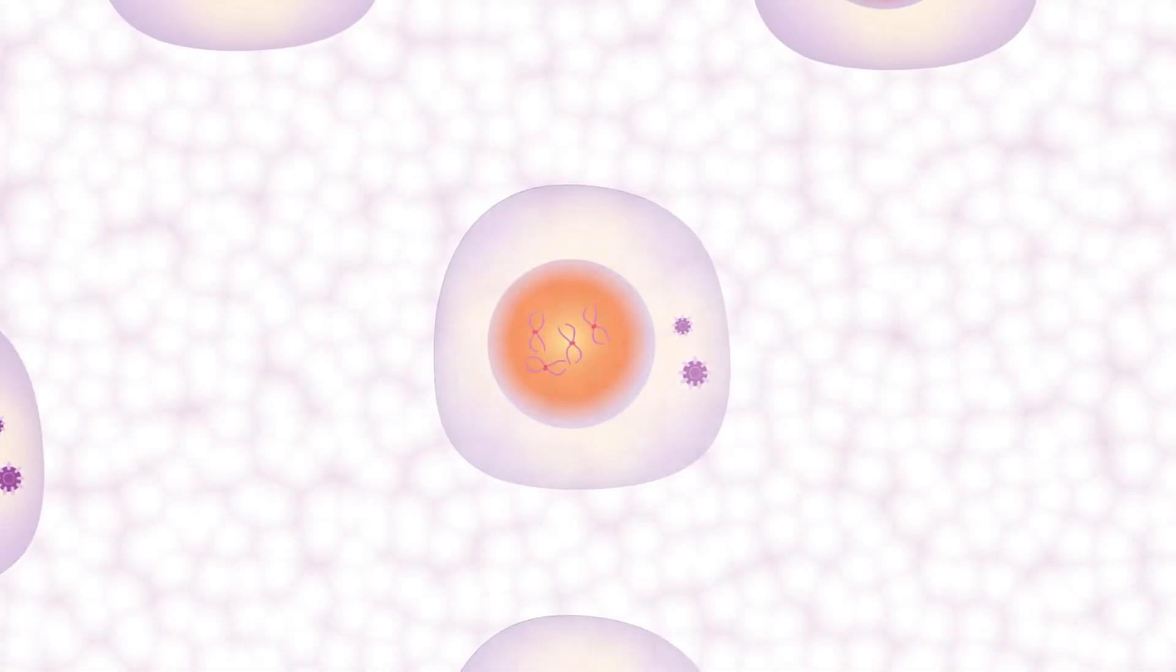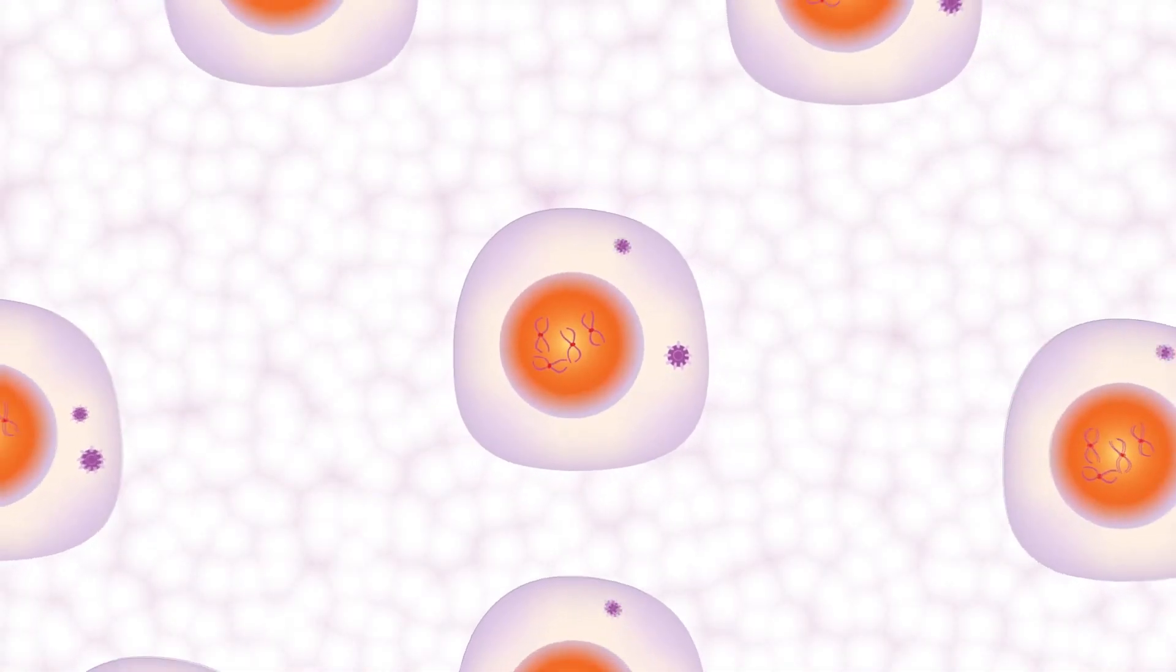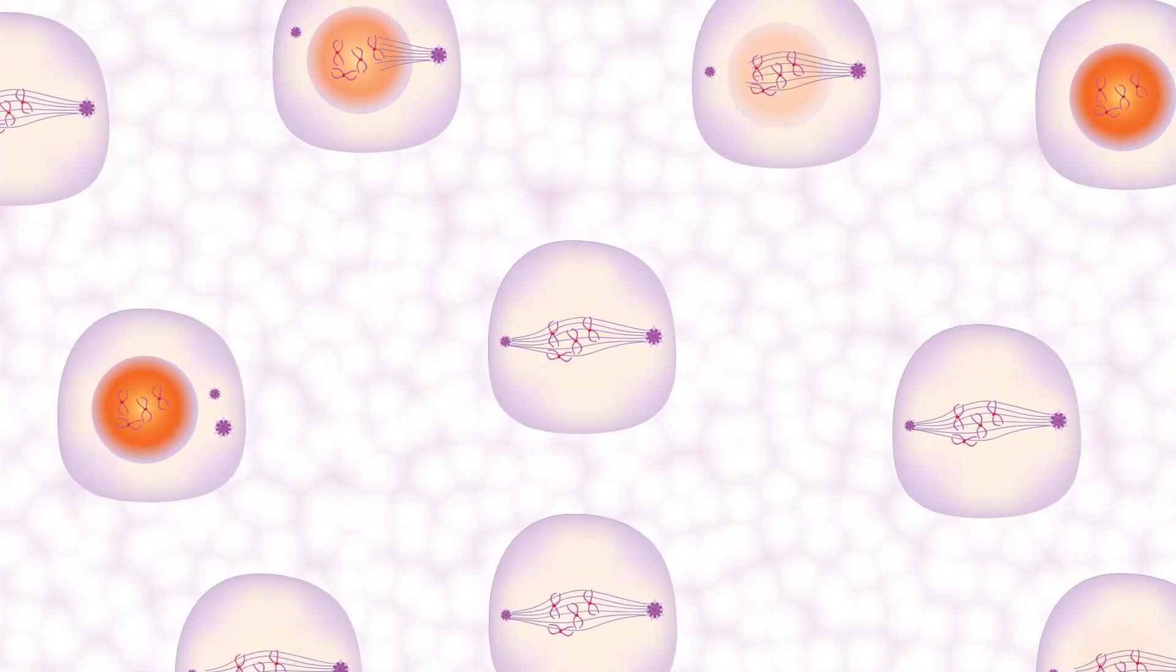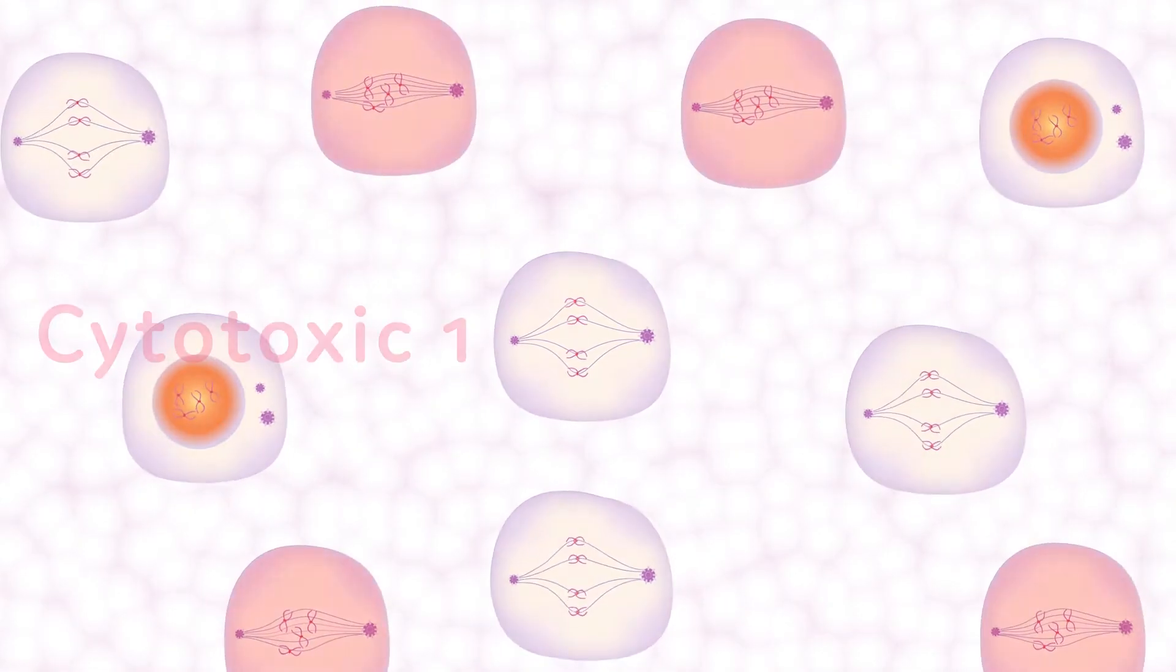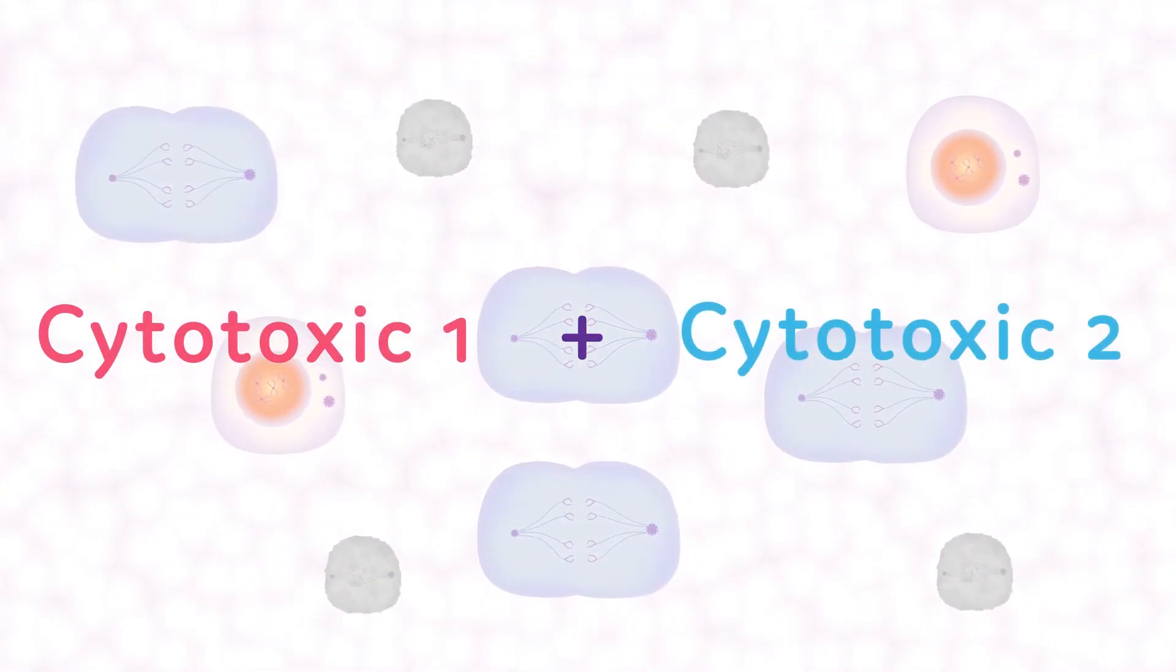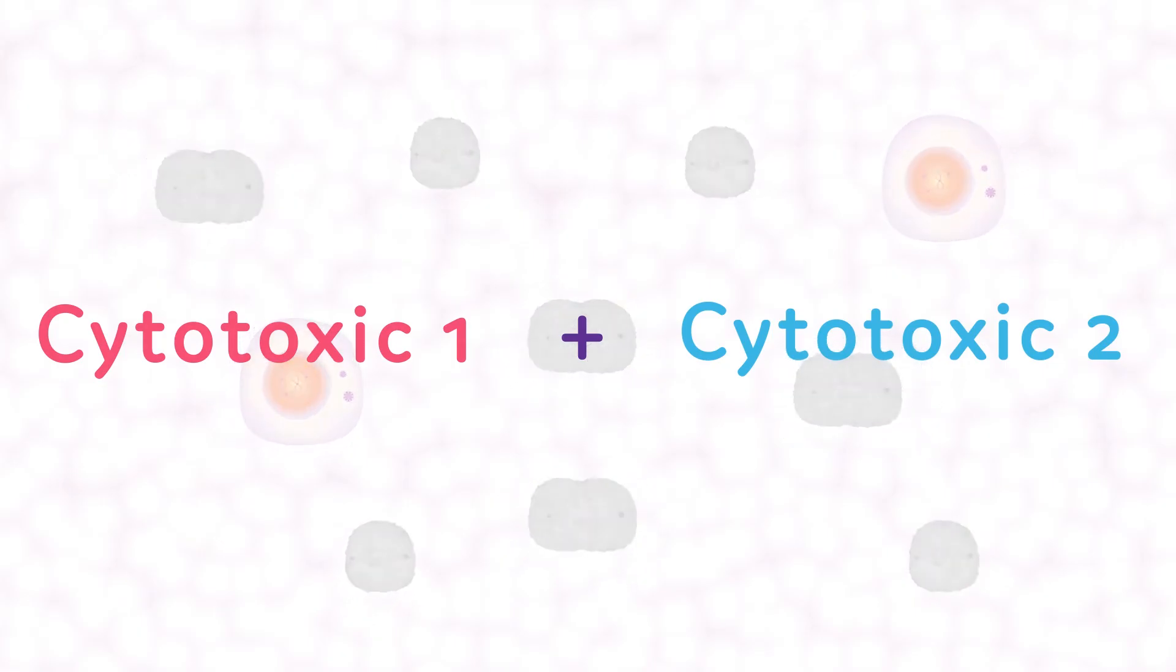To kill as many cells as possible in one go, drugs that work in different phases of the cell cycle are usually used together in what is called a combination regimen. Using different drugs together helps to kill as many lymphoma cells as possible.